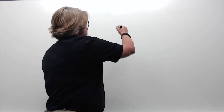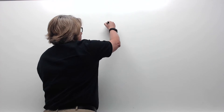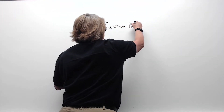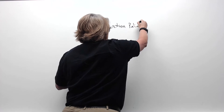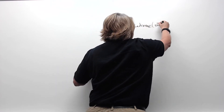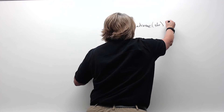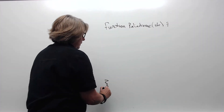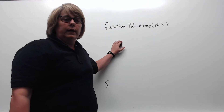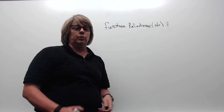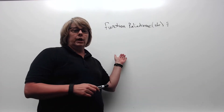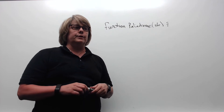Now that I've got some basic information, I can start working on my function. I'm going to create a function, call it palindrome, and it's going to take in one parameter, which is a string. Now I have the beginning of what I'm going to show the potential employer in terms of my coding skills for solving this function.